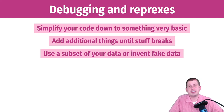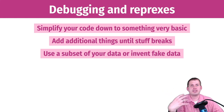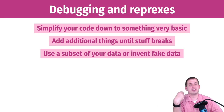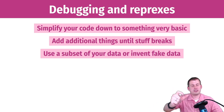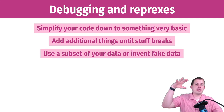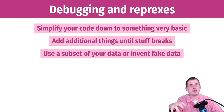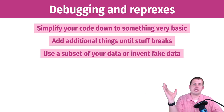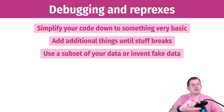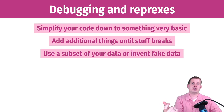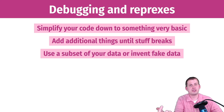Another thing you can do is use a subset of your data or invent fake data. For example, if you're using the gapminder data and something's not working with 100 different rows, use a filter function to look at just the Americas or just Europe — there are fewer countries there. Focus on fixing stuff with just Europe, then add everything back in. This is especially important when trying to group by lots of different things, like 180 different countries — look at just six countries, make sure your group_by and summarize work, then add the rest back in.